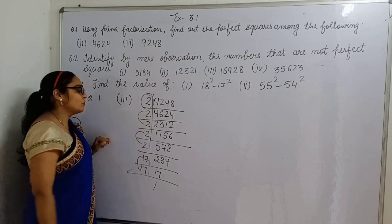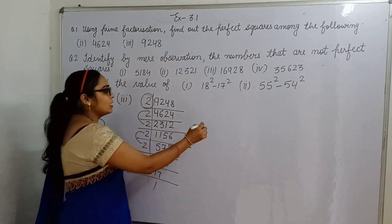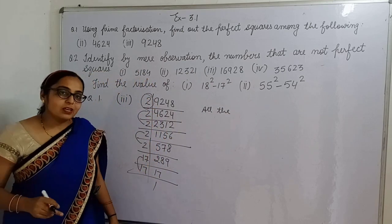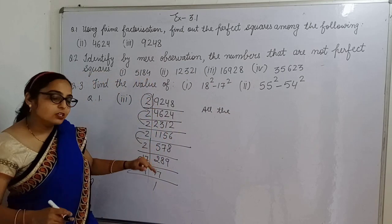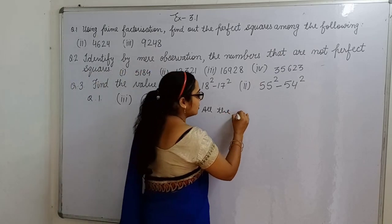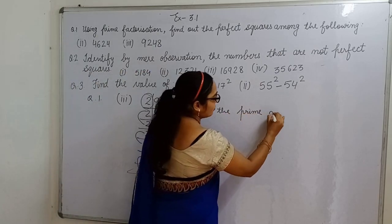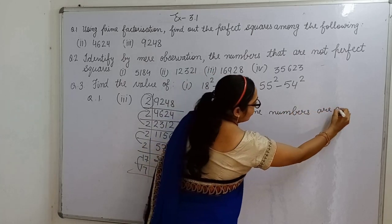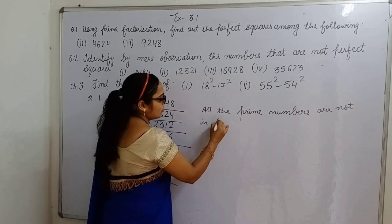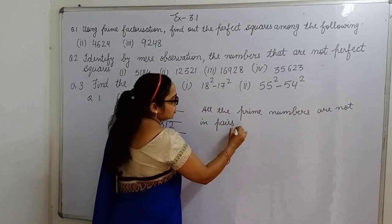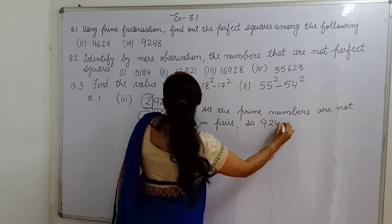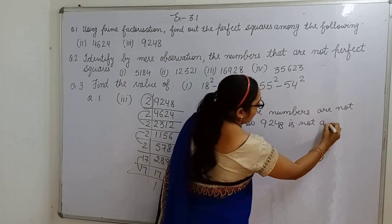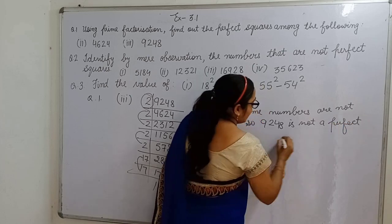Now this 2 is left. It means this number 2 is not in pair. It means this is not a perfect square. All the prime numbers are not in pairs, so 9248 is not a perfect square.